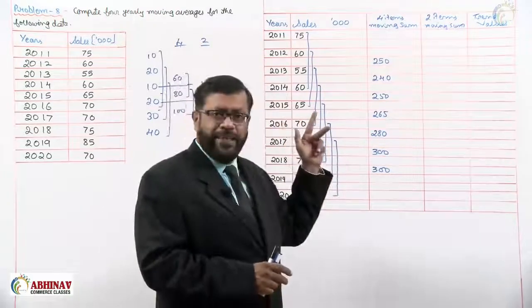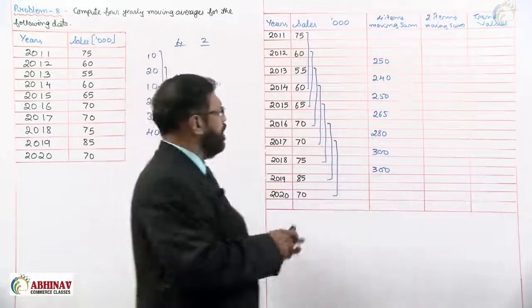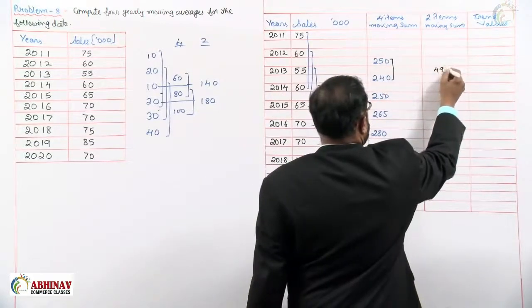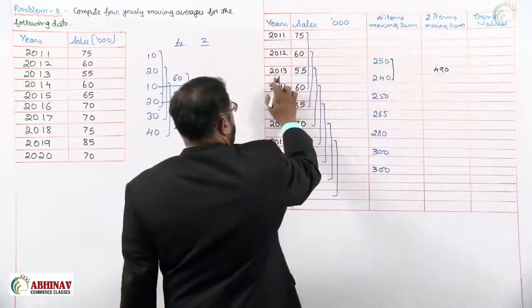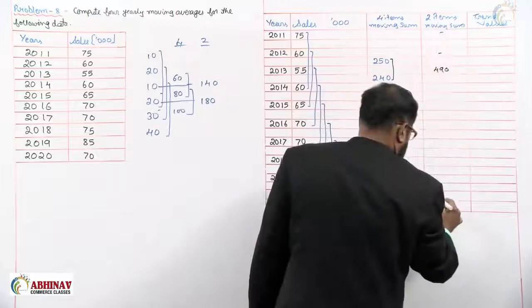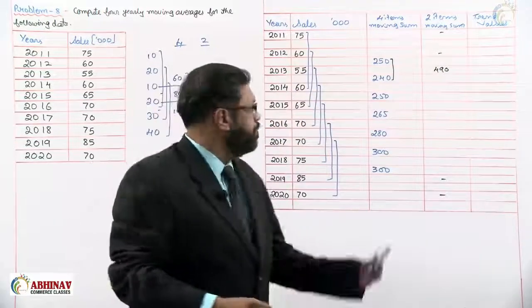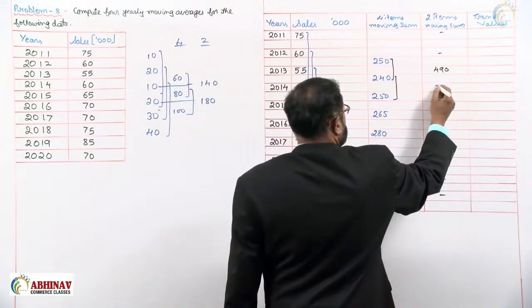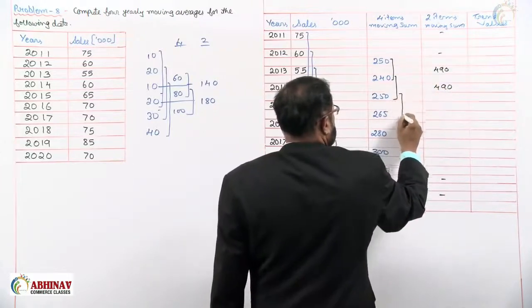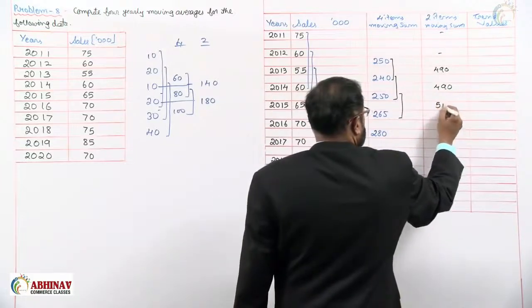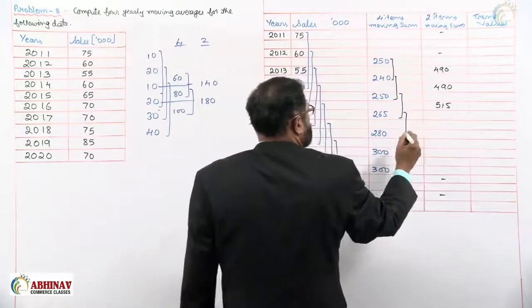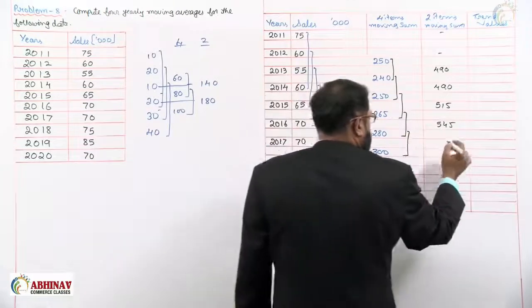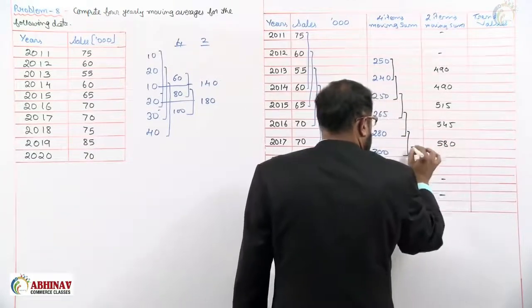So when we add successive pairs from the four items moving sum and find the new total, we get values exactly for each particular year. The first two give 490, which comes exactly for the third year. Naturally, for the first two years and the last two years there will be no trend values. The next pairs give 515, then 545, then 580, and finally 600.